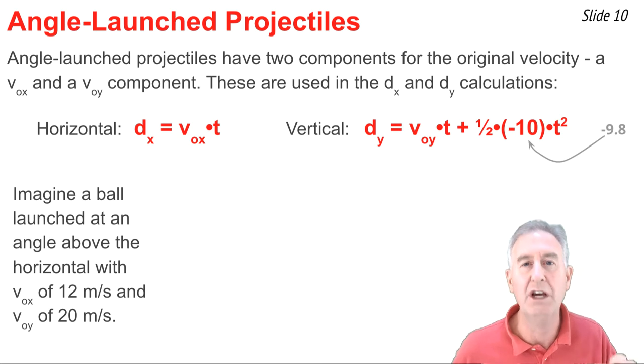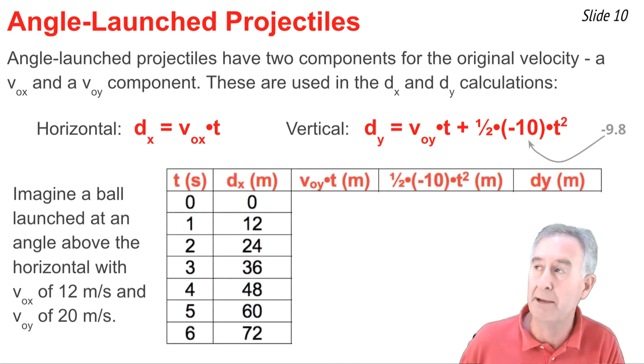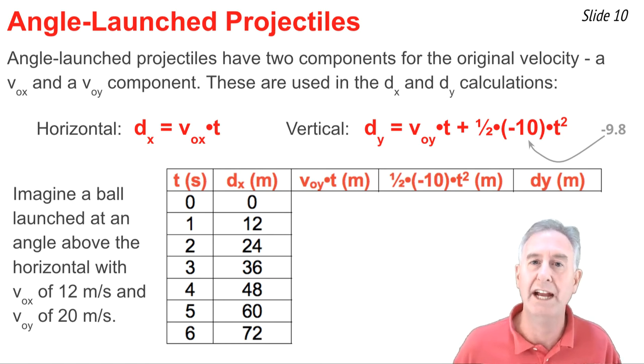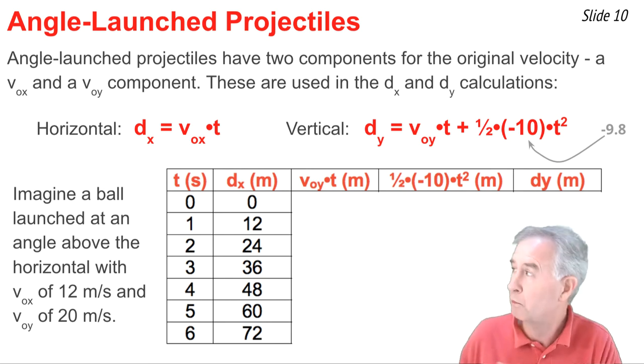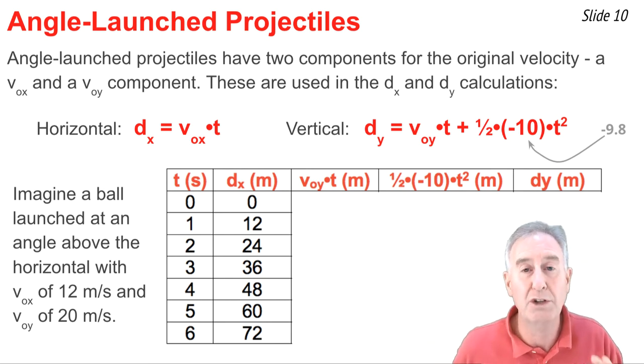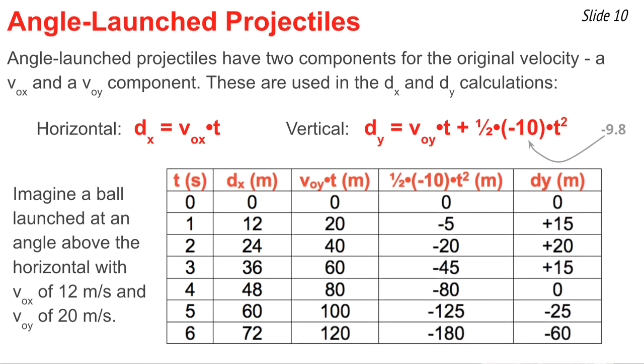So let's consider, originally, the v_ox is 12 and the v_oy is 20. And let's fill in this table here for d_x and d_Y values. For d_x, it's a simple formula. We're just going to go 12 times the time. And we end up getting these values. But for d_Y, there's two terms on the right side. We're going to calculate each term separately. So you'll notice there's a column for each in the table. So when we substitute the value of 20 for v_oy and the value of negative 10 for a_Y, we end up getting these values for the first term, the second term, and the overall value of d_Y.